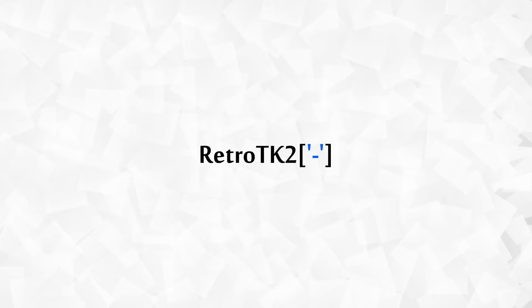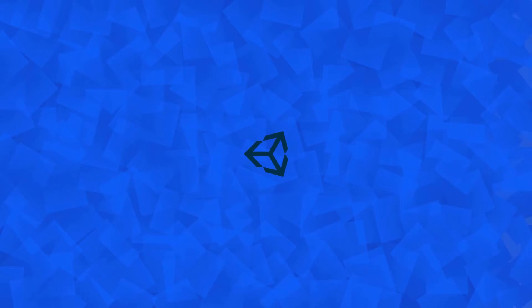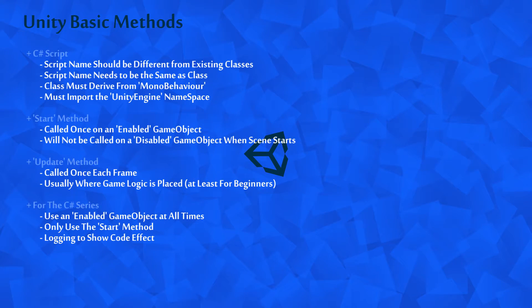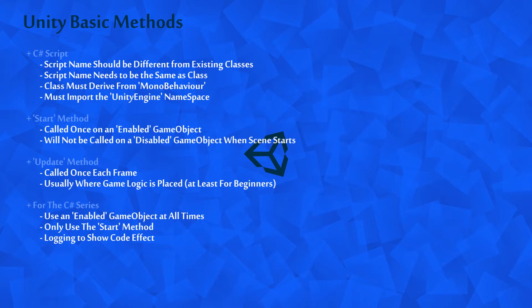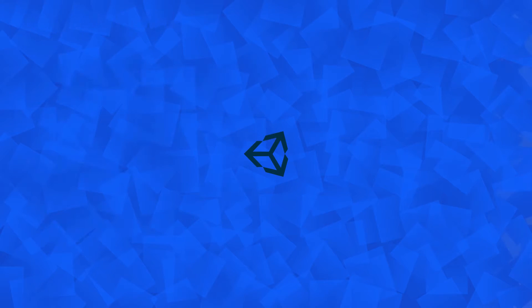Hello, this is RetroTK2 and today we're looking at Unity Basic Methods. We'll take a look at what makes a basic Unity script, and also look at the Start and Update methods. We'll also go over some of the conditions that will be met with our C Sharp series. Let's get started.